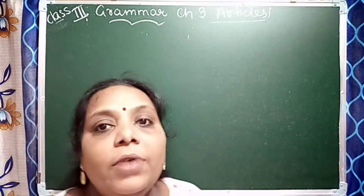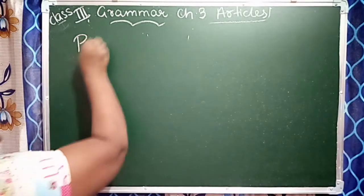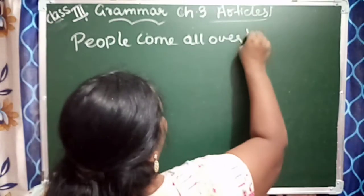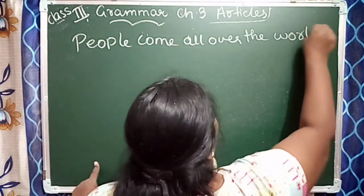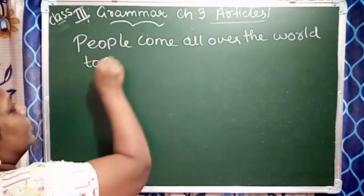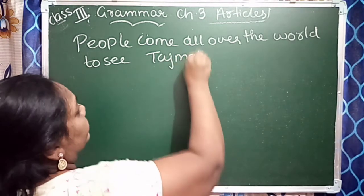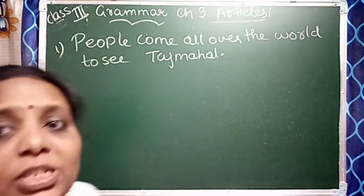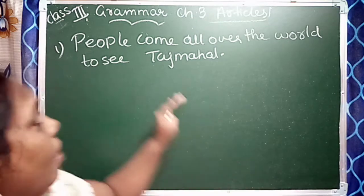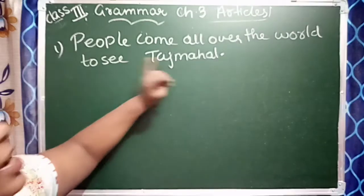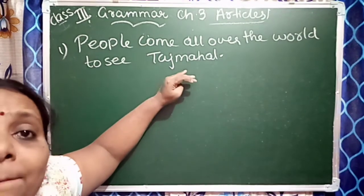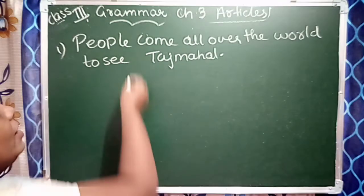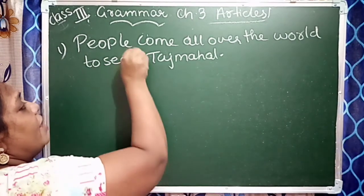First one is: 'People come from all over the world to see Taj Mahal.' Is it a proper sentence? No — because Taj Mahal is a building name, a specific place, so we have to use 'the'. The correct sentence is: 'People come from all over the world to see the Taj Mahal.'